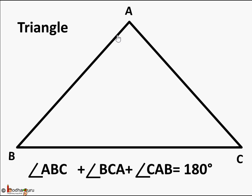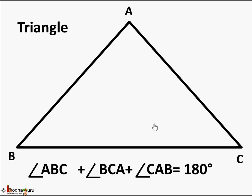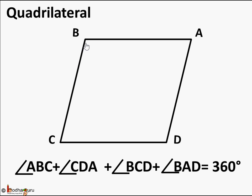As we have seen in our last lessons, a triangle has three sides and the sum of all its interior angles is equal to 180 degrees. Here is a triangle ABC whose interior angles are angle ABC, angle BCA, and angle CAB. The sum of all three interior angles is equal to 180 degrees.